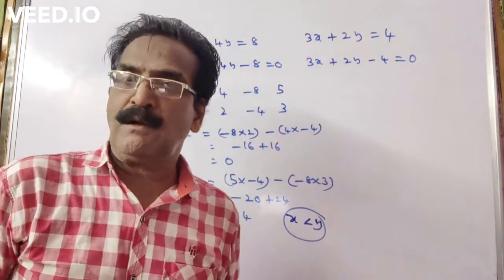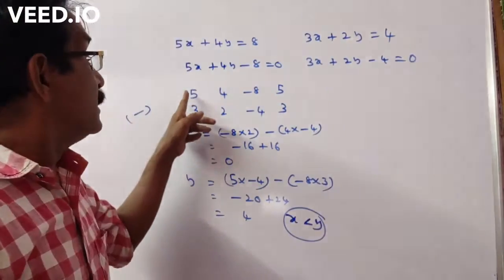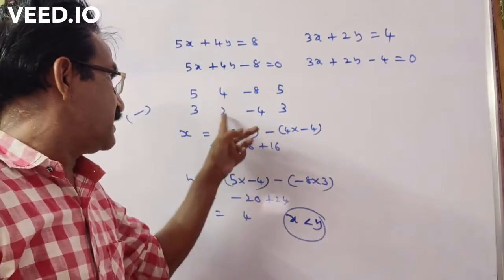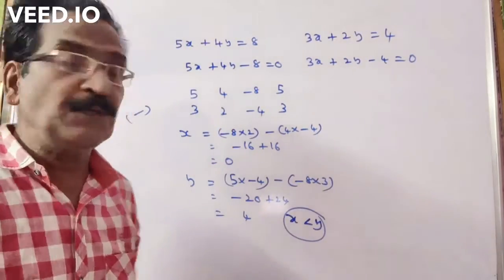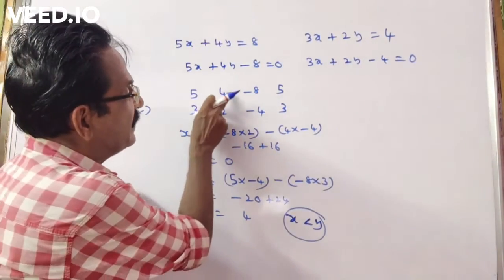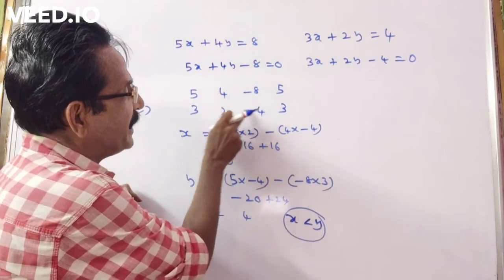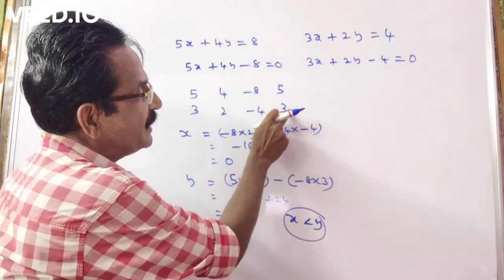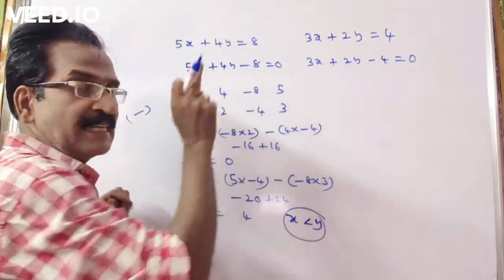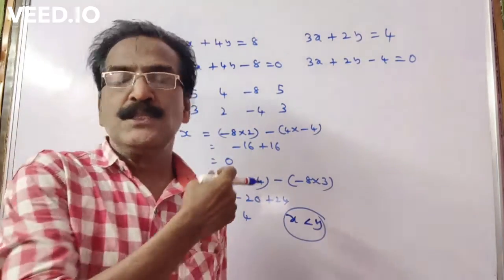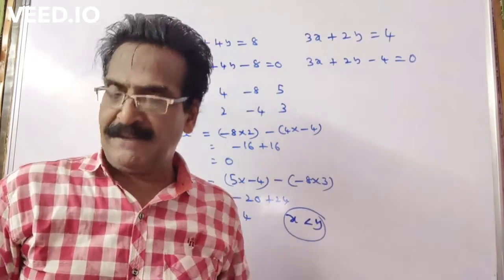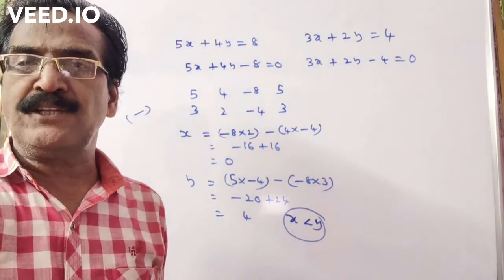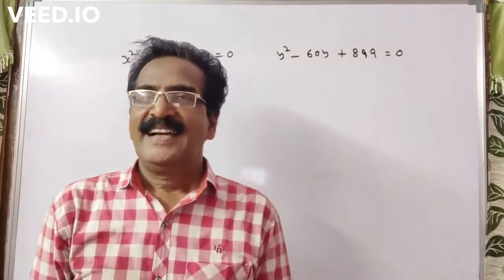One more thing: if this cross product minus this cross product is positive, then you set up the x and y values the other way around. Already two problems were discussed in our previous videos. Please watch those. Okay friends, thank you, have a nice day.